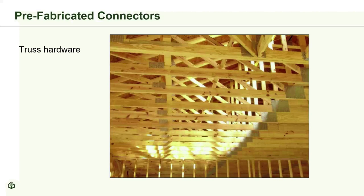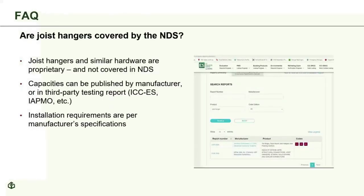Truss plates are usually proprietary and cannot be modified in the field. Are joist hangers covered by the NDS? No — they are proprietary products and therefore not covered by the NDS. Whenever you get prefabricated connectors in the field, make sure you have an evaluation service report to confirm they're being installed correctly and for the correct application. Also, prefabricated connectors cannot be modified in the field — if you see connectors hammered flat or bent to fit, make sure they're replaced with a proper connector.